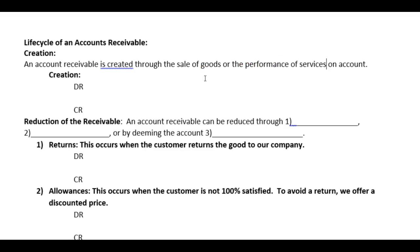There are other types of receivables as well — notes receivables, trade receivables — but accounts receivables specifically are created through the sale of goods or performance of services. In the lifecycle of a receivable, that is its beginning — its birth. When it is created, we debit the accounts receivable account. AR is a universal abbreviation for accounts receivable, and you're welcome to use it as long as you understand what it means.